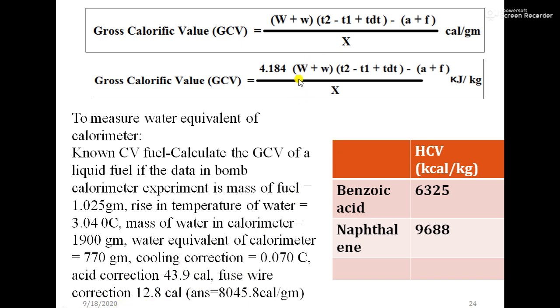After putting all values, I am explaining: w is 1900, ω is 770, t2 minus t1 is 3.04, t×dt is 0.07, a value is 43.9 calorie, f value is 12.8 calorie. After putting that value you will get the answer 8045.8 calorie per gram.